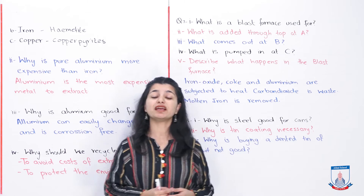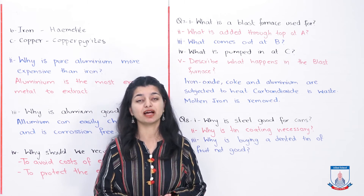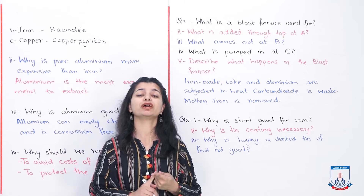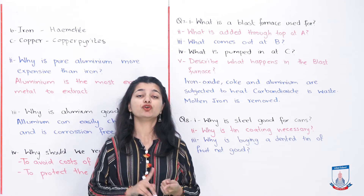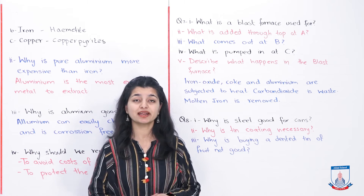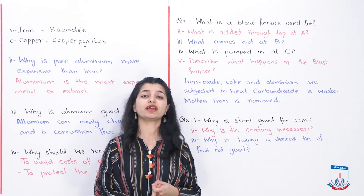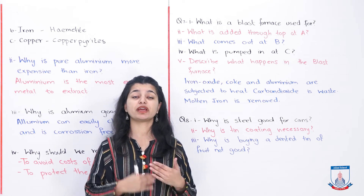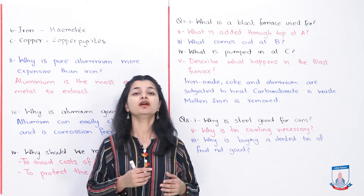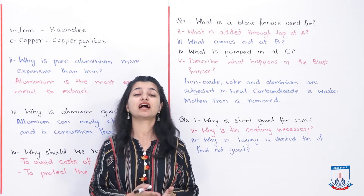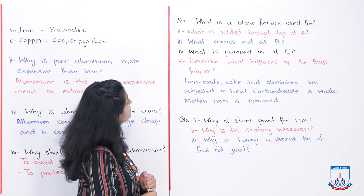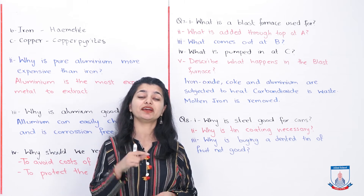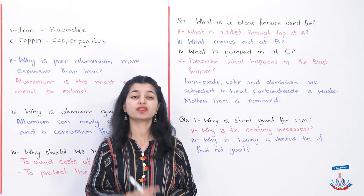The second question asks what is added through the top at point A. What is put into the blast furnace from the top includes: iron oxide (because we need to extract iron), coke which is carbon (because it reacts with oxygen to remove iron), and limestone (to remove impurities). Then, what comes out at point B is mainly carbon dioxide, CO2 — that exits as a waste gas. At point C on the bottom, hot air is pumped in to provide heat to the blast furnace.